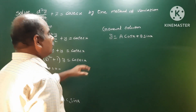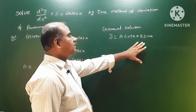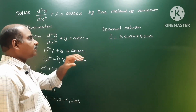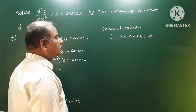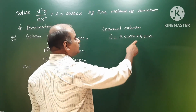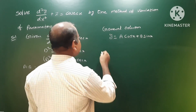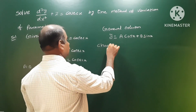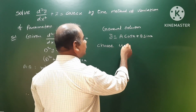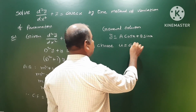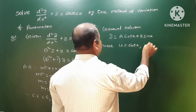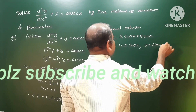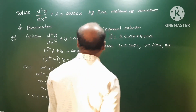By the method of variation of parameters, the general solution is y = A·cos(x) + B·sin(x), and we have to calculate the values of A and B. We take u = cos(x) and v = sin(x), and R (the right-hand side) is cosec(x).